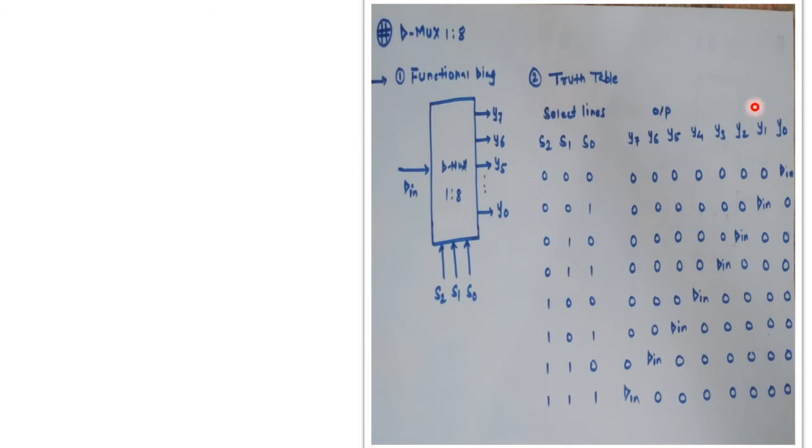Now coming back to its truth table. Here we have 3 select lines s2, s1, s0, and if we have 3 select lines there will be 8 combinations, starting with the first one 0 0 0, then 0 0 1, and so on up to the last case 1 1 1.